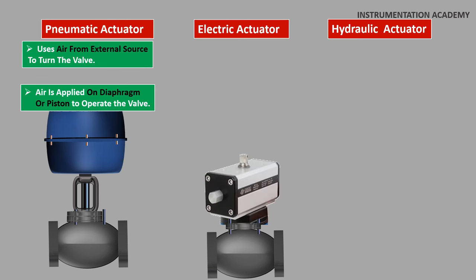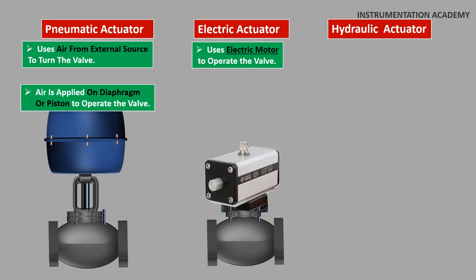Electric valve actuator uses an electric motor to provide torque required to operate the valve. These type of actuators are commonly used in remote locations where it will not be practical to pipe hydraulics or compressed air.